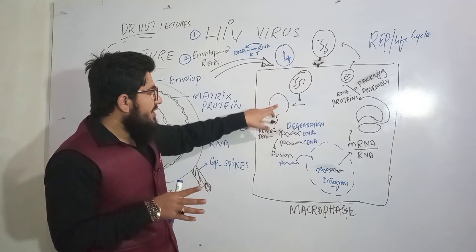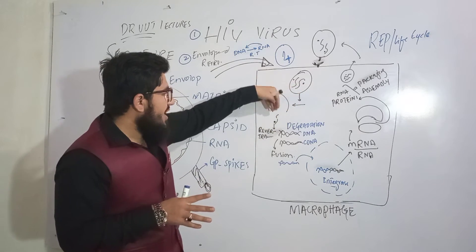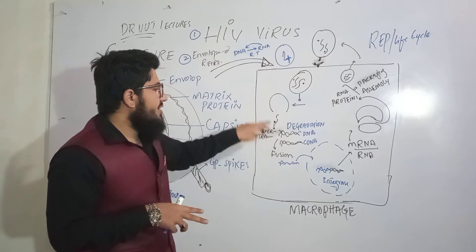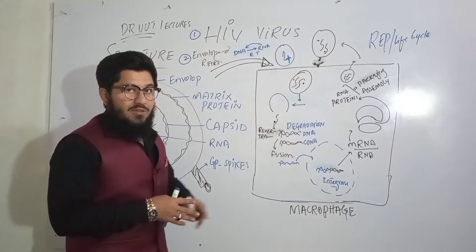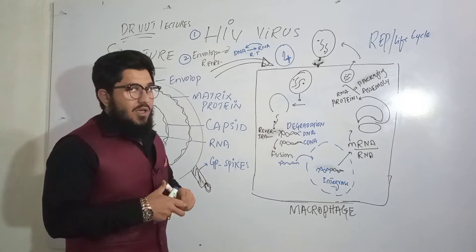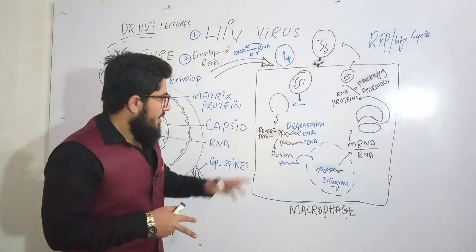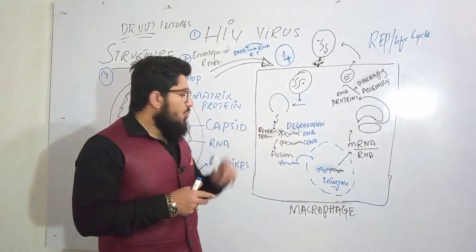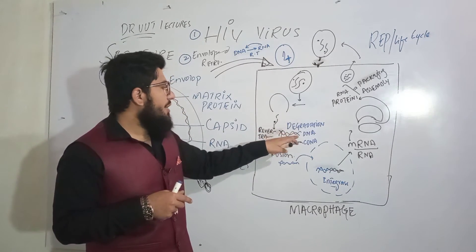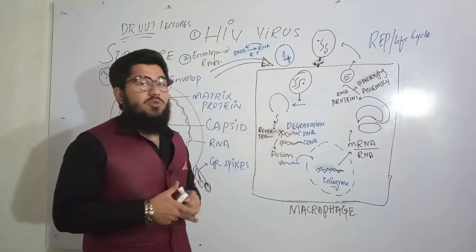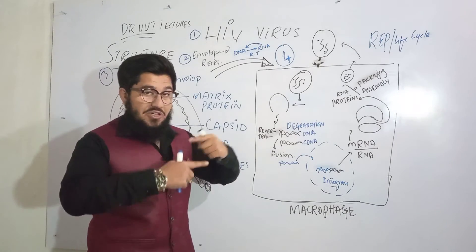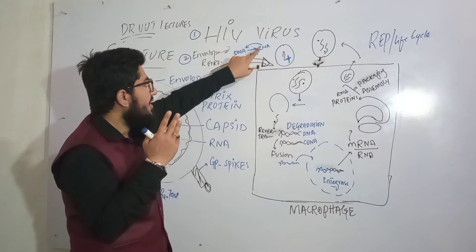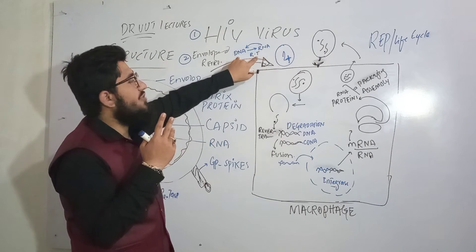After uncoating, the genetic material — the RNA — starts moving out, along with reverse transcriptase. Now this virus will synthesize DNA from this RNA by means of reverse transcription. Reverse transcription is the synthesis of DNA from RNA by means of the reverse transcriptase enzyme.